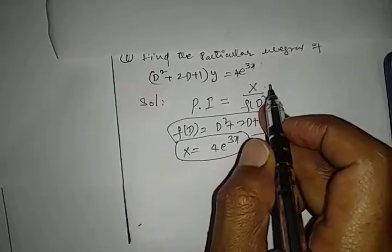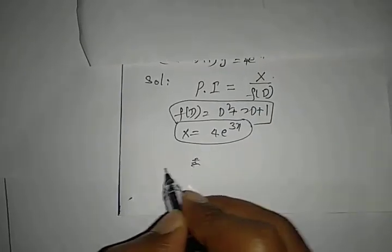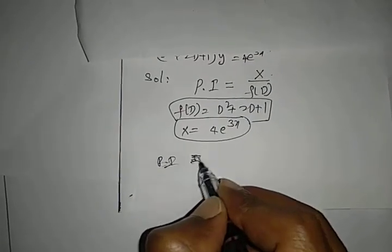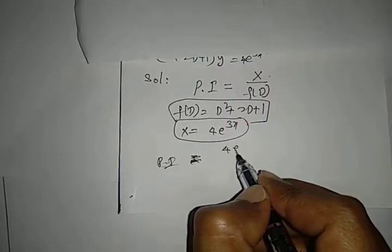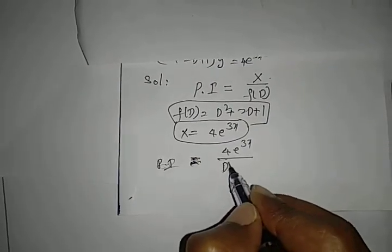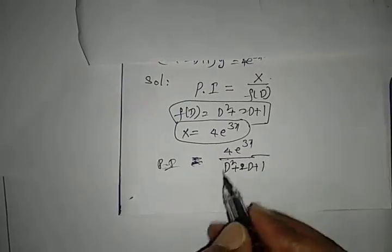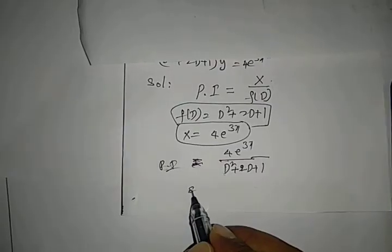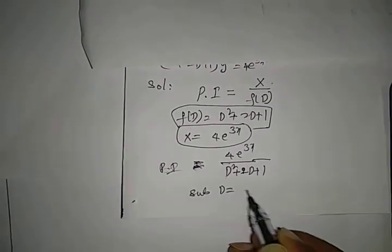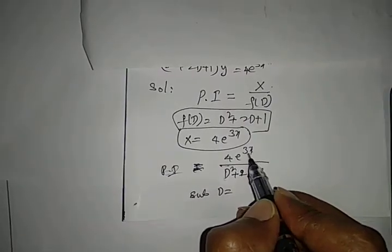Substitute these two values in the formula: PI = 4e^(3x)/(D² + 2D + 1). Here, substitute D = 3, which is the coefficient of x in e^(3x).